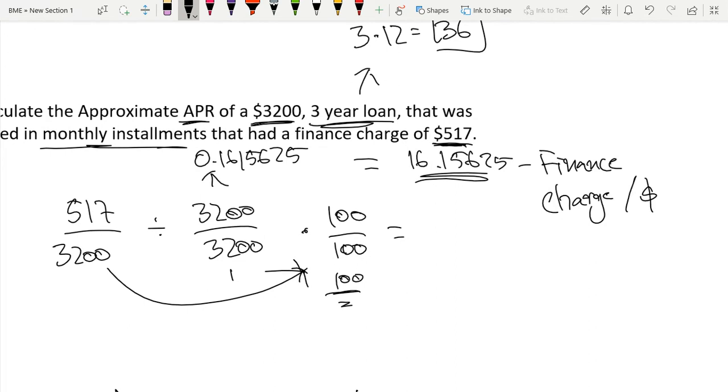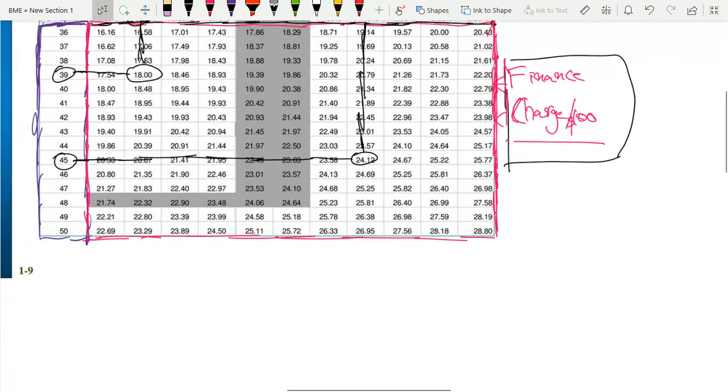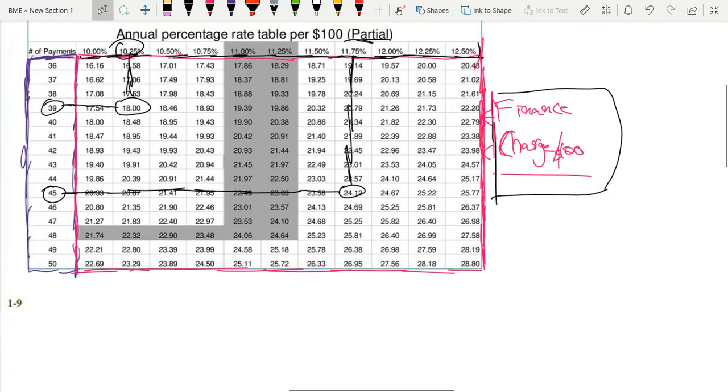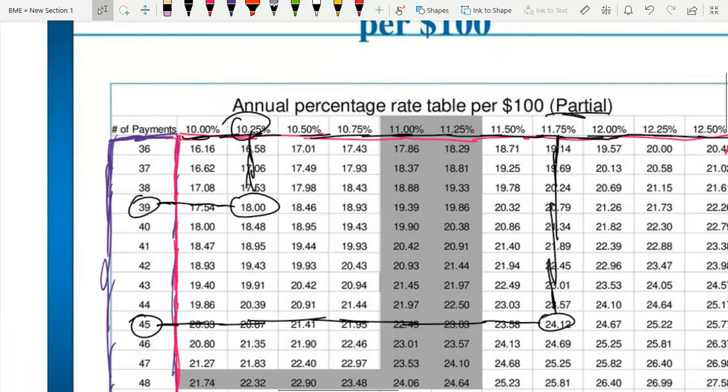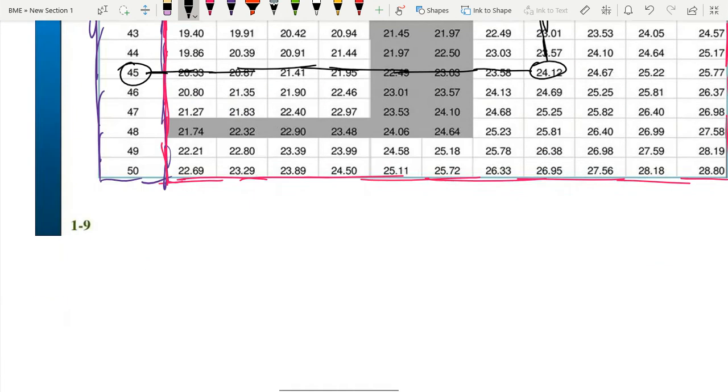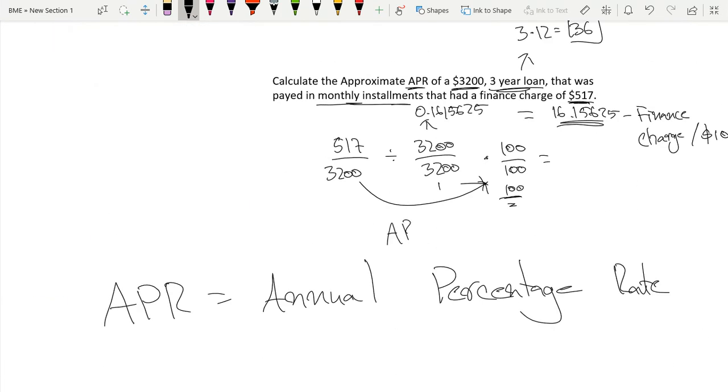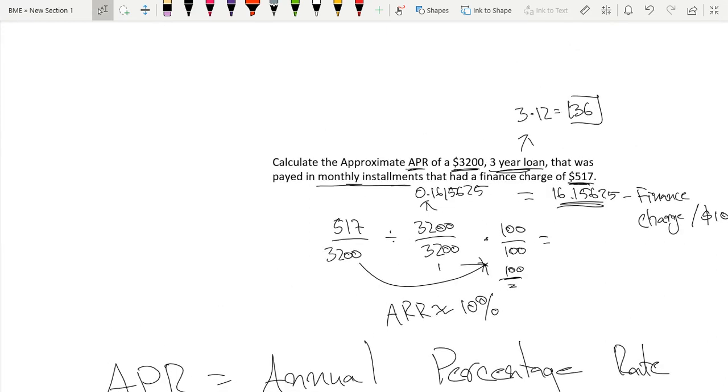Now if I scroll up, 16.15625 is very close to 16.16, so we can use this. We had 36 payments, so our annual percentage rate is approximately 10%. I hope you found this video helpful. Thank you for watching.